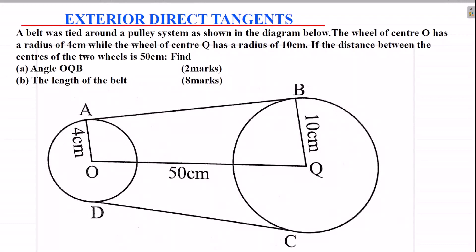Hello, let us solve this question on exterior direct agents. A belt was tied around a pulley system as shown in the diagram below. The wheel of center O has a radius of 4 cm while the wheel of center Q has a radius of 10 cm. If the distance between the centers of the two wheels is 50 cm, find: A, angle OQB (2 marks), and B, the length of the belt (8 marks). Those are the two questions you're supposed to do.